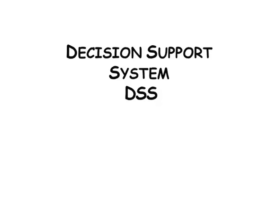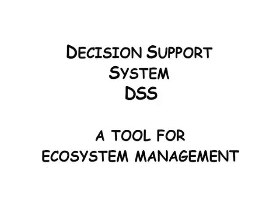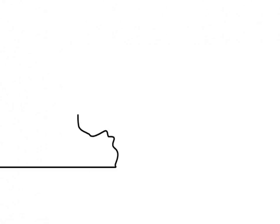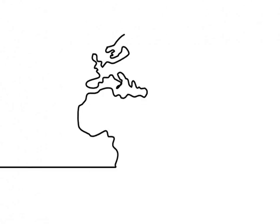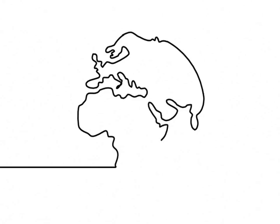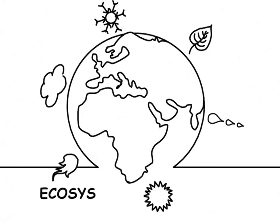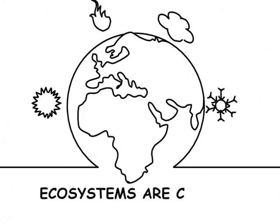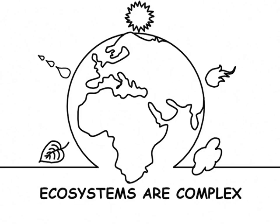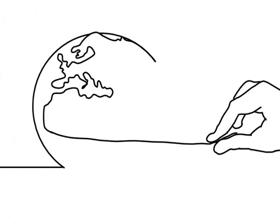Decision Support System — a tool for ecosystem management. Our planet is an ecosystem made up of many different parts. These parts interact with one another in complex and dynamic ways. The environment is all interconnected and we are interconnected with it.